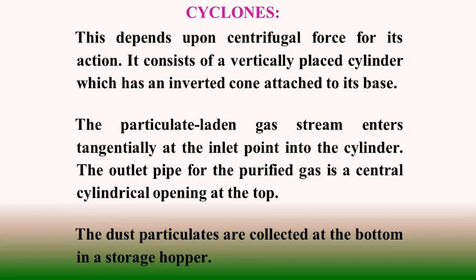Cyclones employ centrifugal force for the separating action. They consist of a vertically placed cylinder with a conical base. When the particulate-laden gas stream enters tangentially from the top of the cyclone, it has a swirling motion across the cyclone space. Dust is separated at the bottom and clean gas comes out from the top through a central pipe. The collected dust goes to a storage hopper.